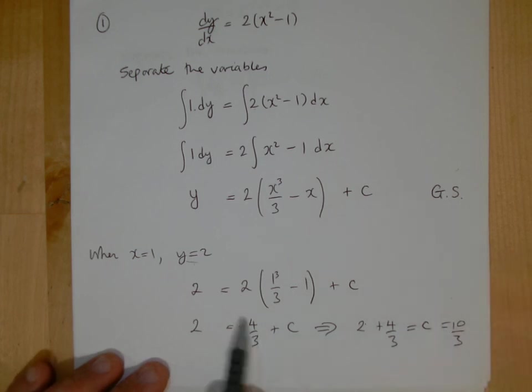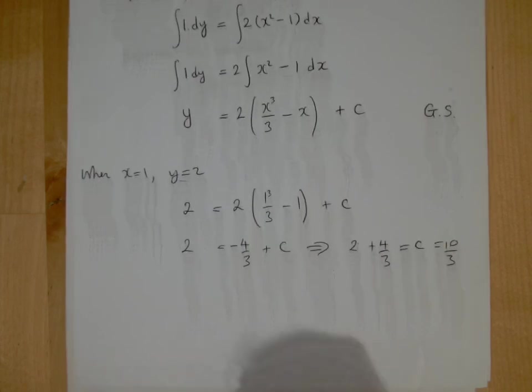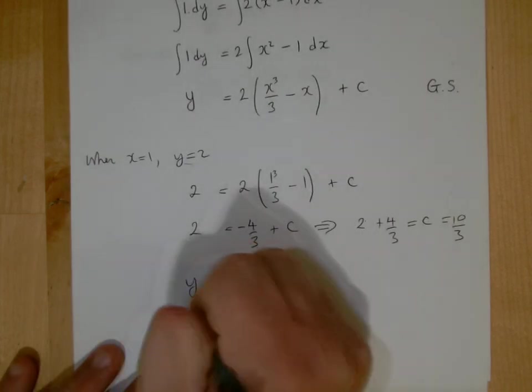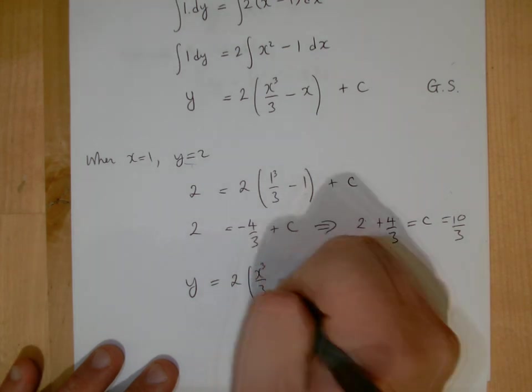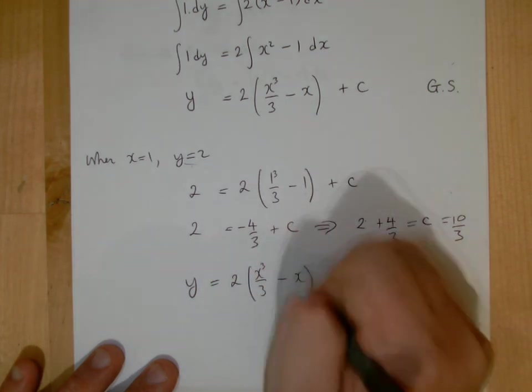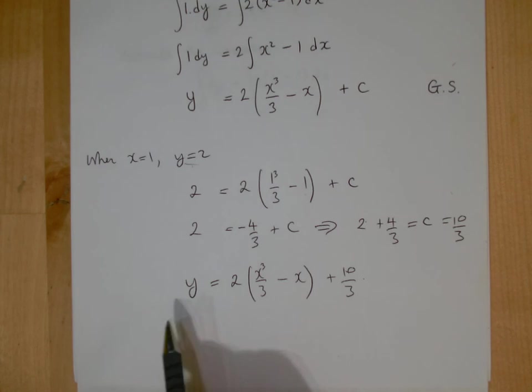Just by taking that over, it becomes a plus, and then we work at it, we can calculate it if we want, and we've got c, and we're going to see it to be 10/3. So that means that we've actually got a particular solution, so y will equal to 2(x³/3 - x) plus 10/3. We know of course then the constant is 10/3. So we've actually solved the differential equation, and we've got y in terms of x.